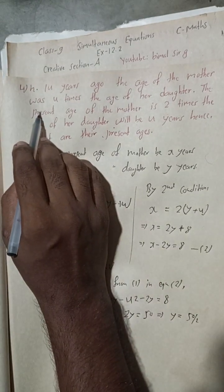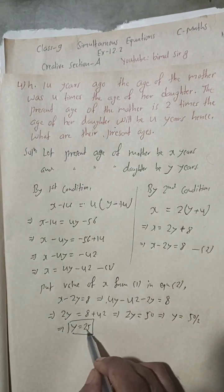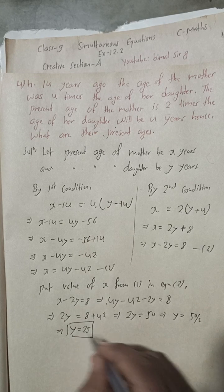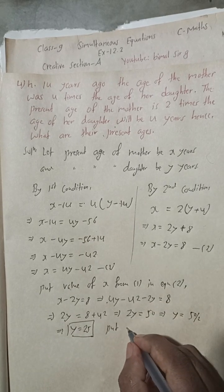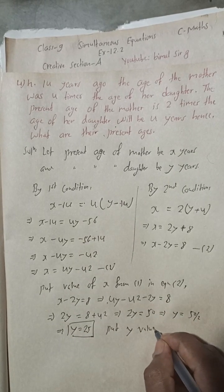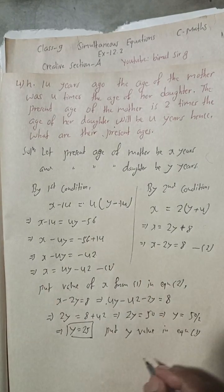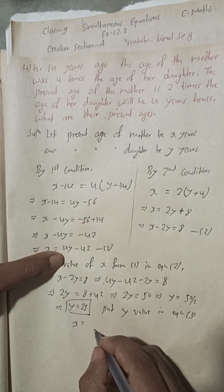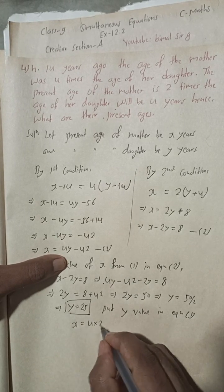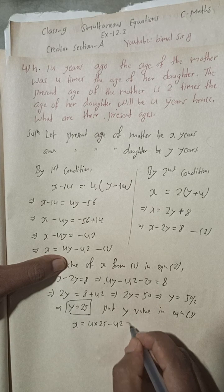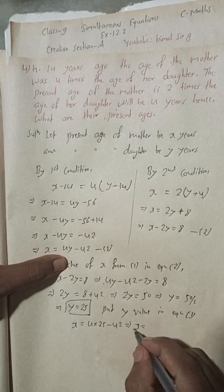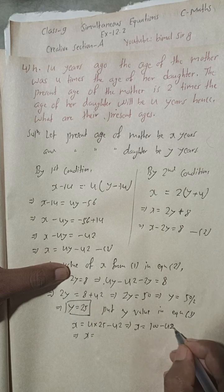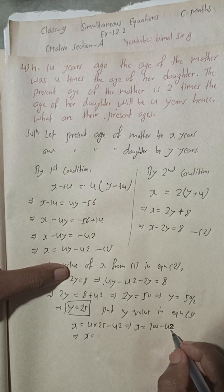Now put Y = 25 into equation 1 to find X. X = 4 times 25 minus 42, so X = 100 minus 42, which gives X = 58.